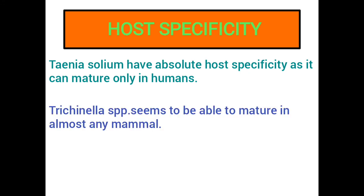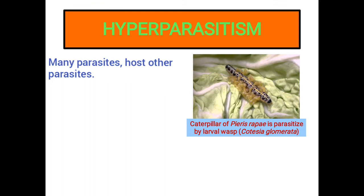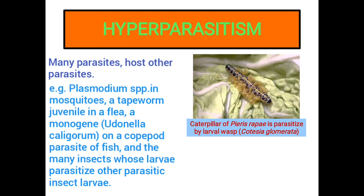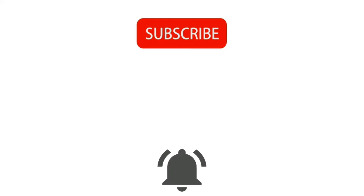The nematode Trichinella sp. seems to be able to mature in almost any mammal. Hyperparasitism: Many parasites host other parasites, a condition known as hyperparasitism. Examples include Plasmodium in mosquitoes, a tapeworm juvenile in a flea, a monogenean on a copepod parasite of fish, and the many insects whose larvae parasitize other parasitic insect larvae.